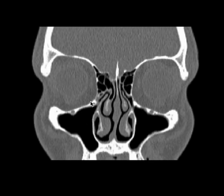This is your osteomeatal complex. We start seeing the middle turbinate. The middle turbinate on the left side is smaller than the right side, so possibly there was a big spur over here which was impinging and did not allow the middle turbinate to come down or increase in size — it blocked its development.